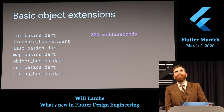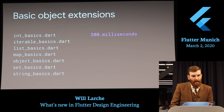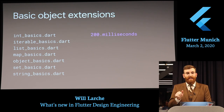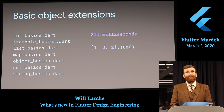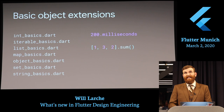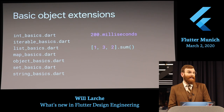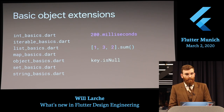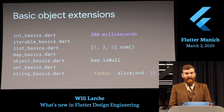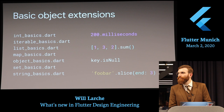Here's an example. In int basics, we've got typesafe duration objects that read like real numbers. There are common operations on lists like sum, min, and max. It's easy to read isNull on all objects. And you can use slice methods on lists and strings that are common in other languages.